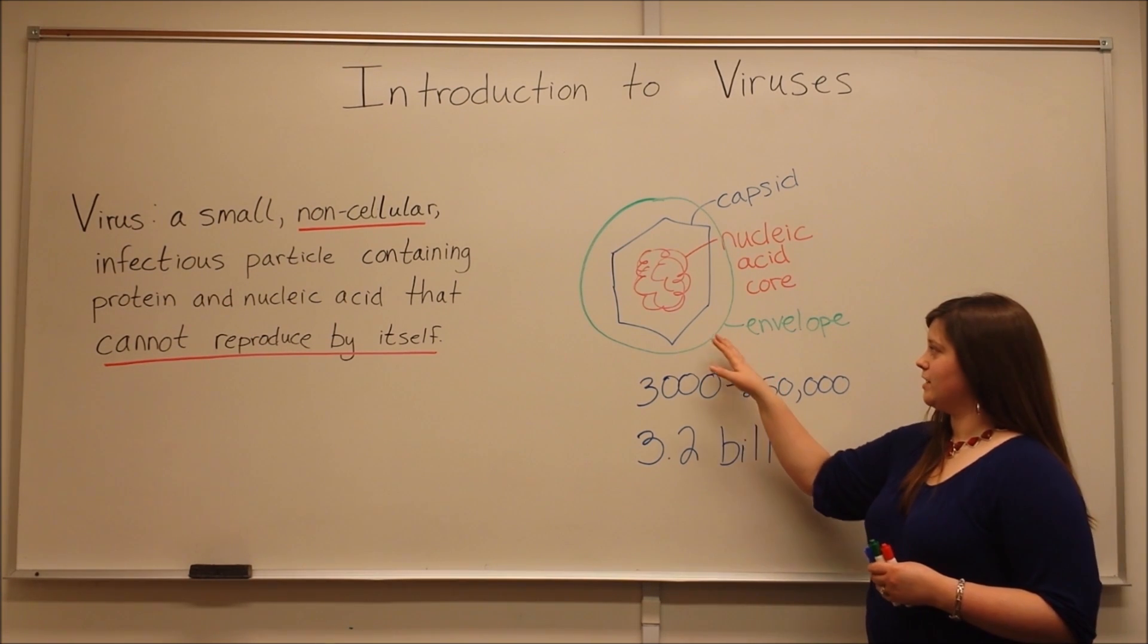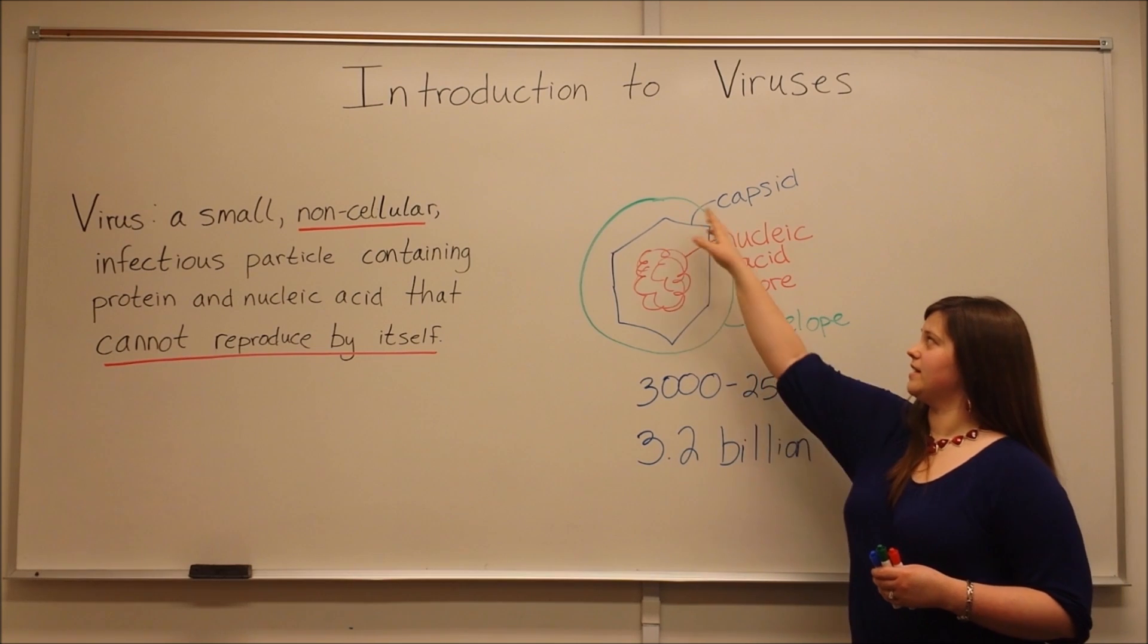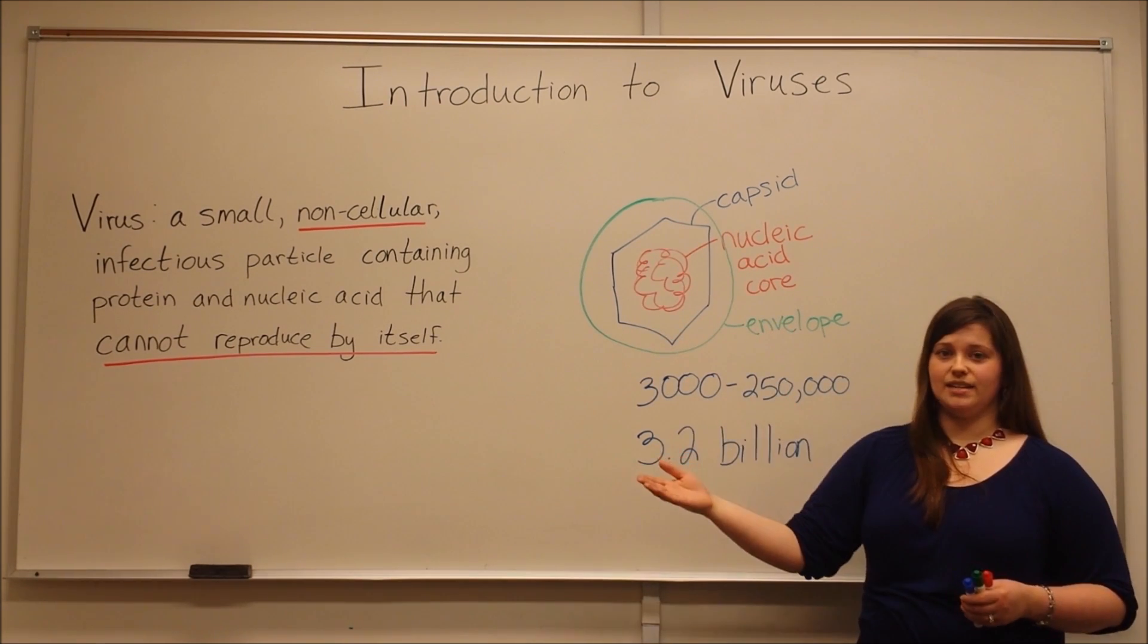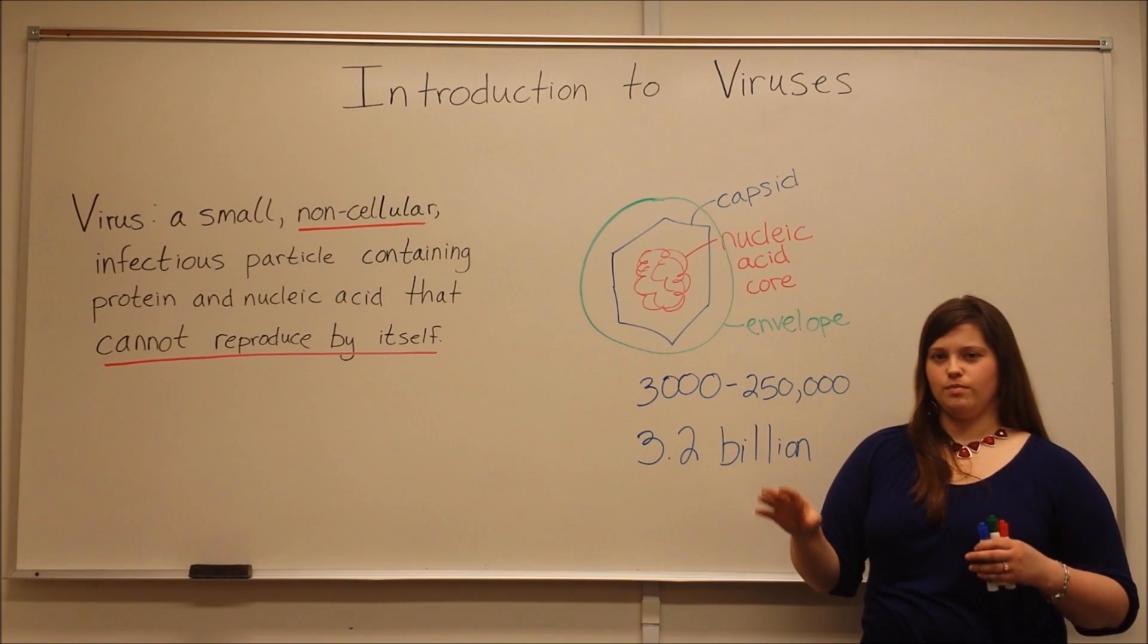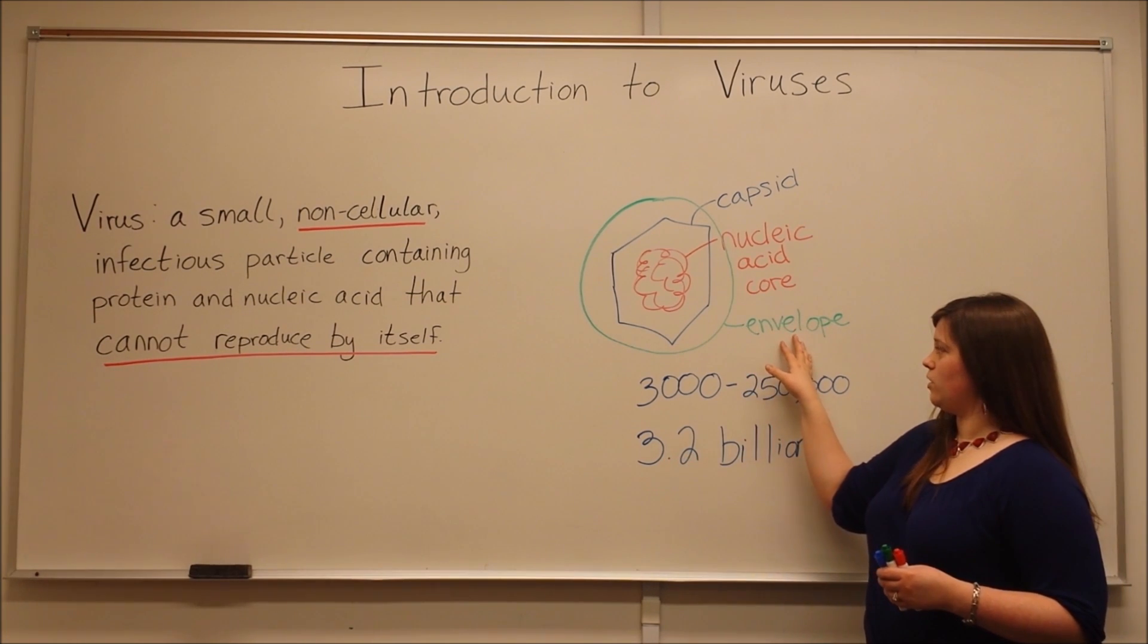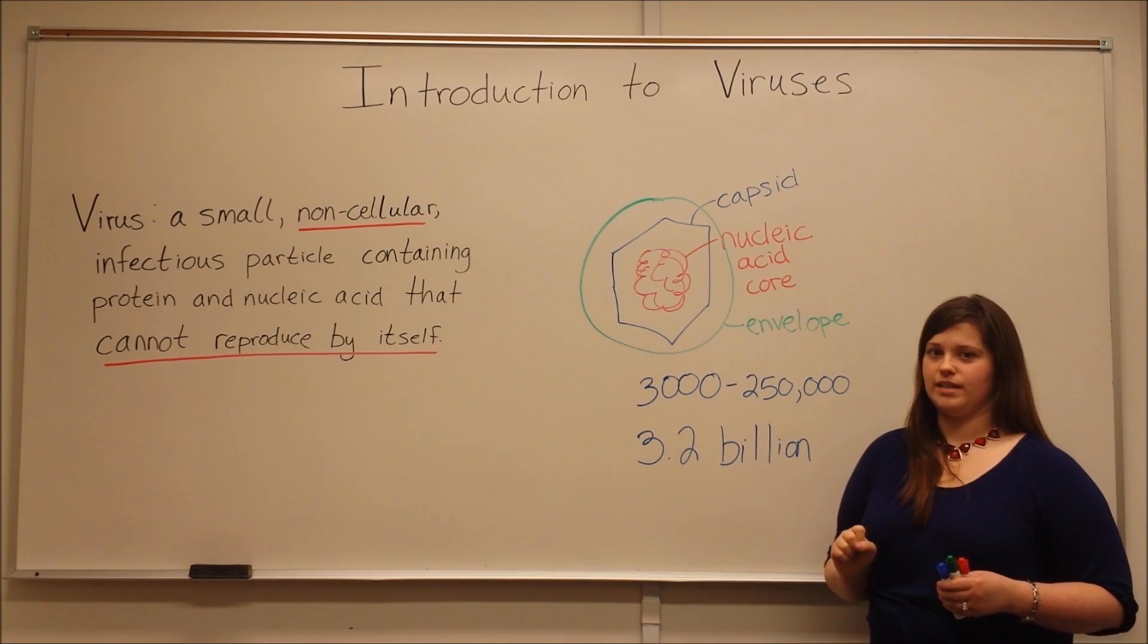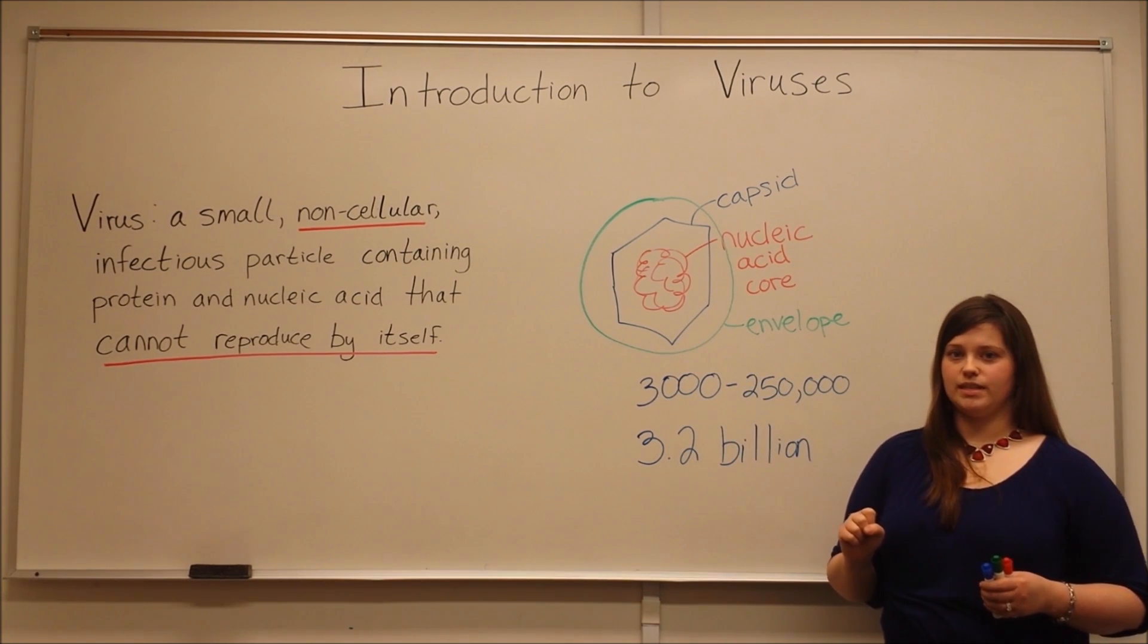This is because viruses that are enveloped take this envelope from the host cell membrane when they exit the host cell, so that when the immune system sees this envelope, it actually thinks that it's just seeing a host cell. So this is one of the ways that viruses can evade the immune system.